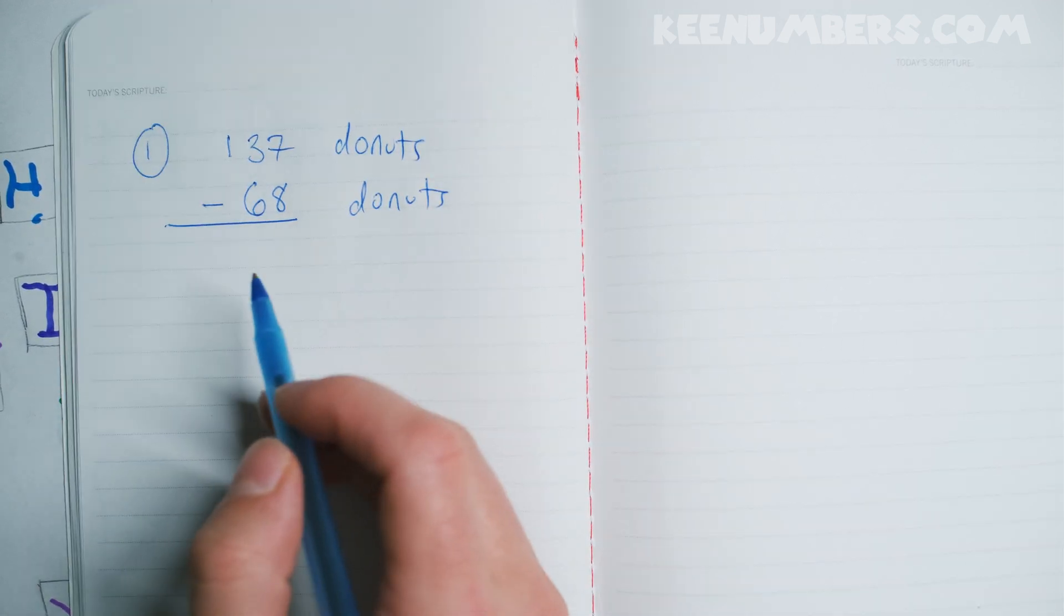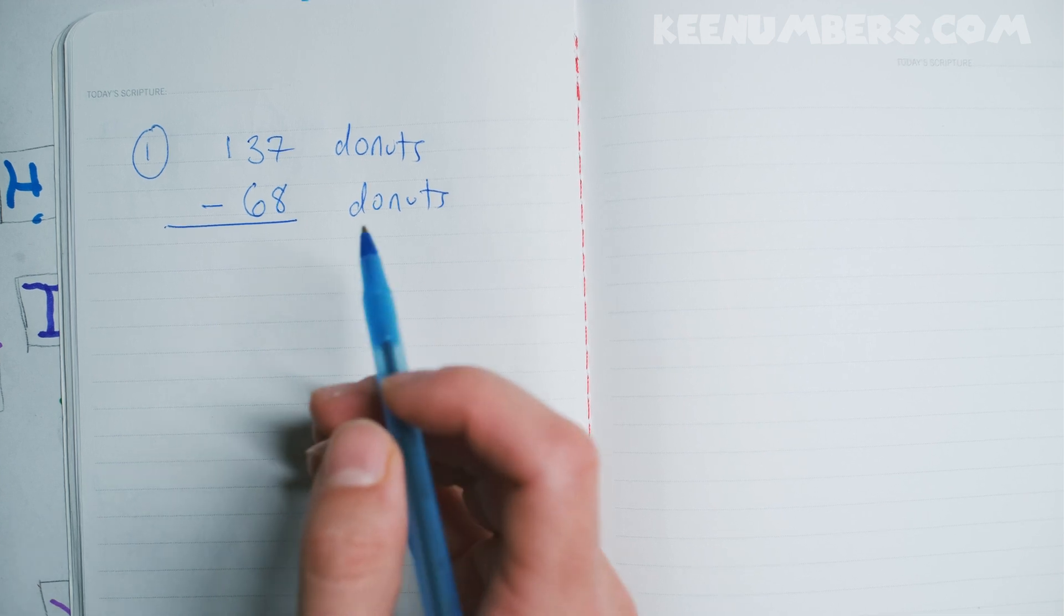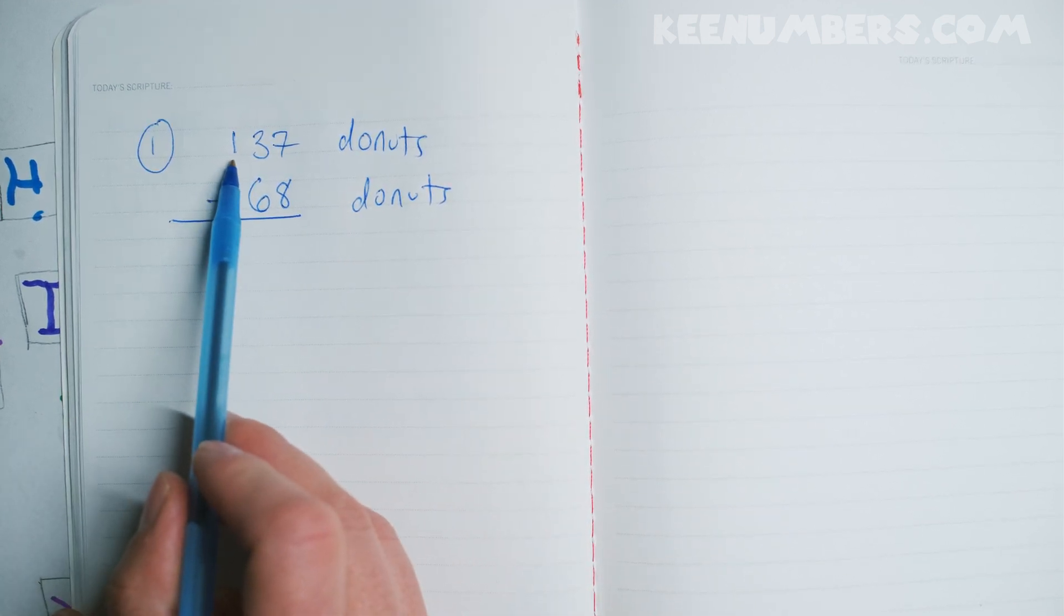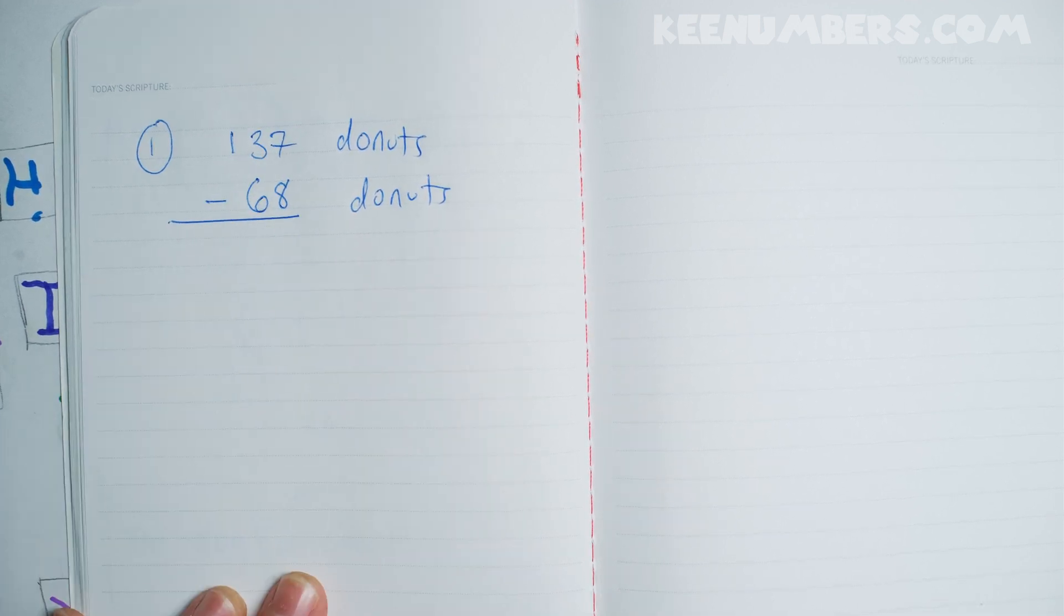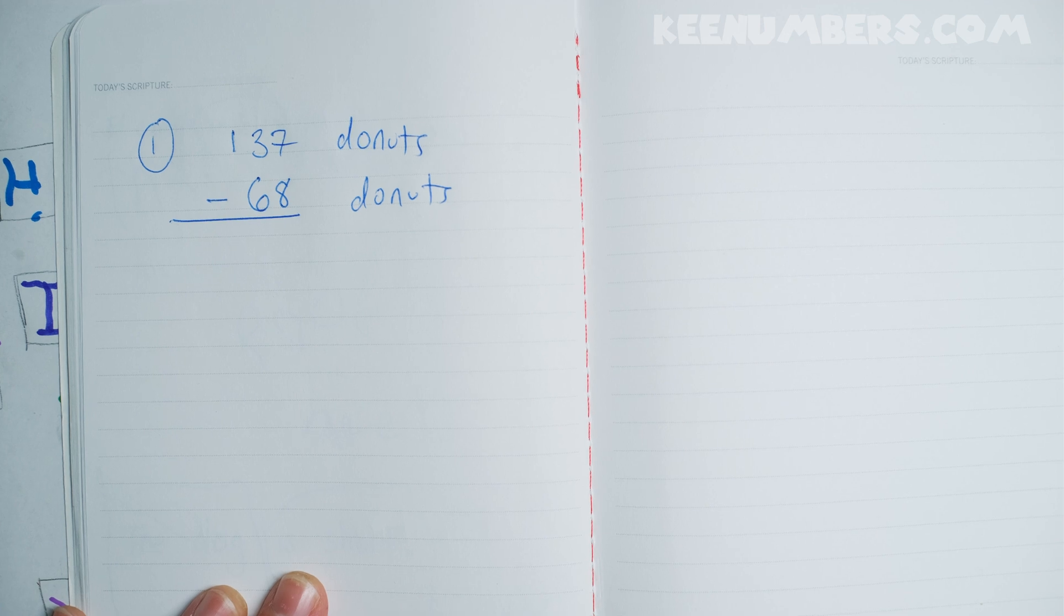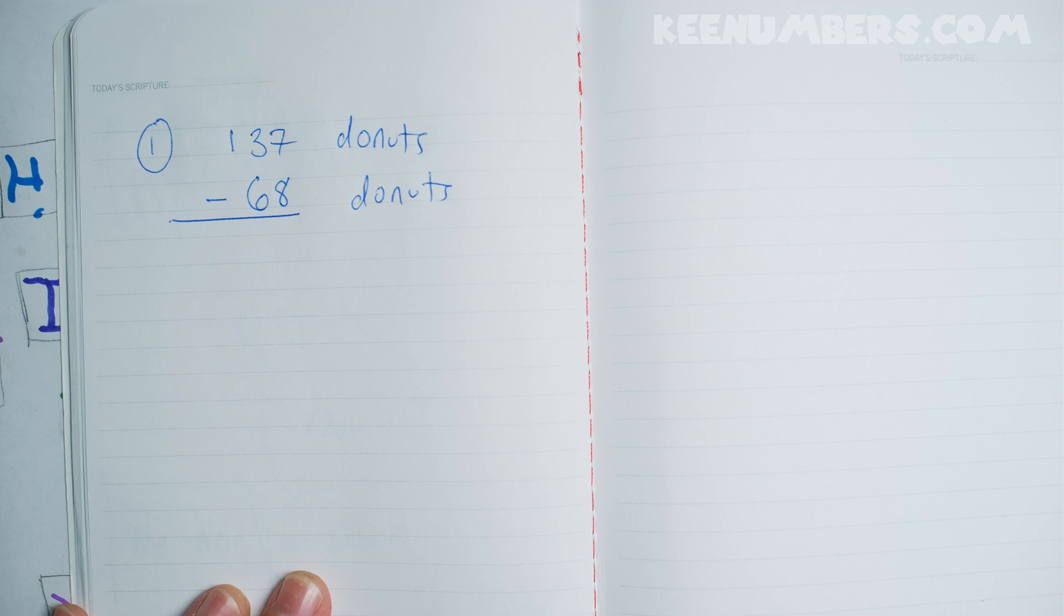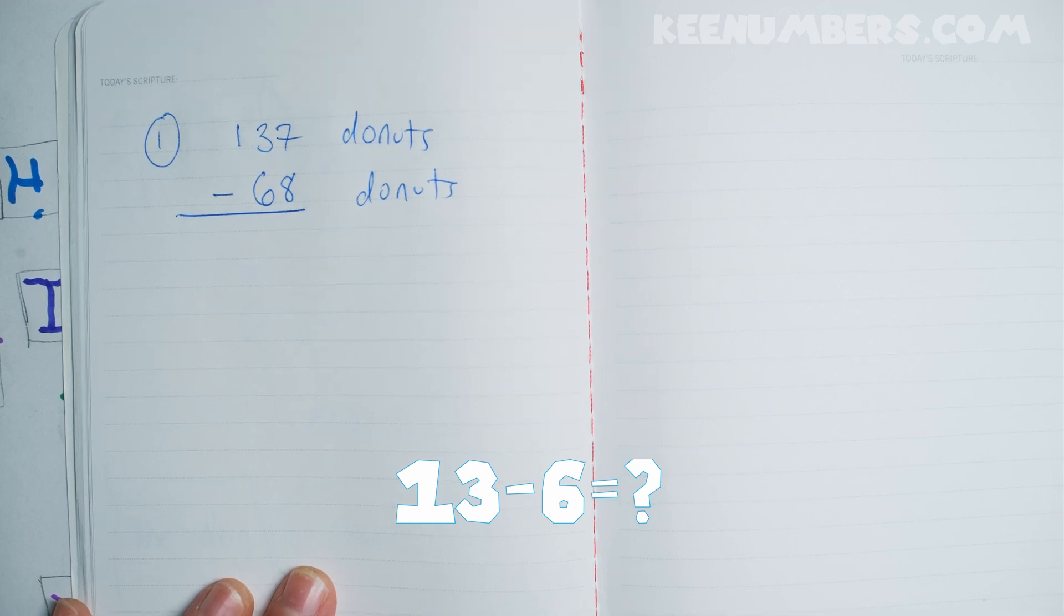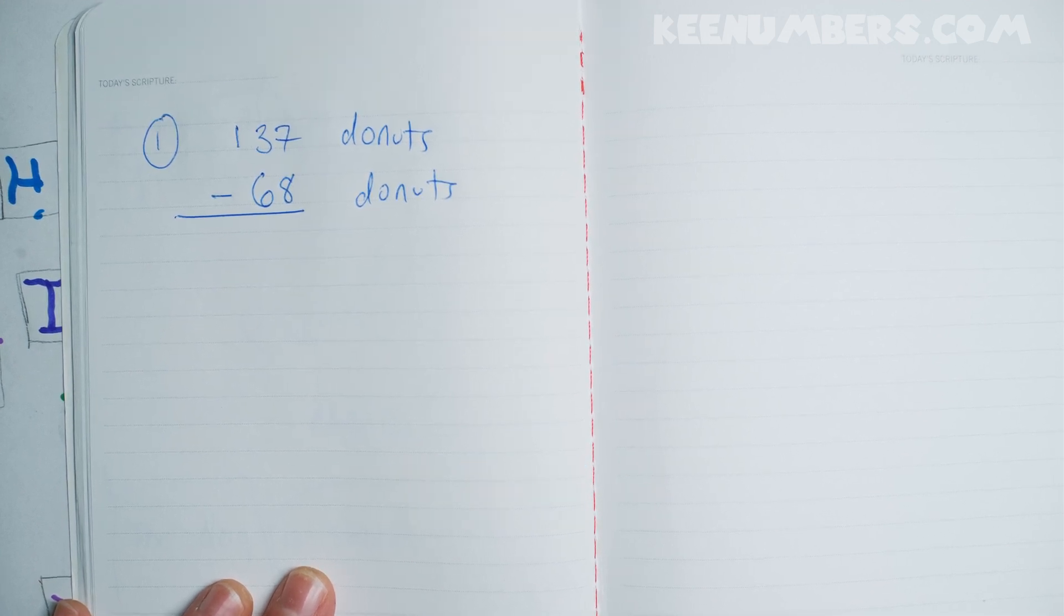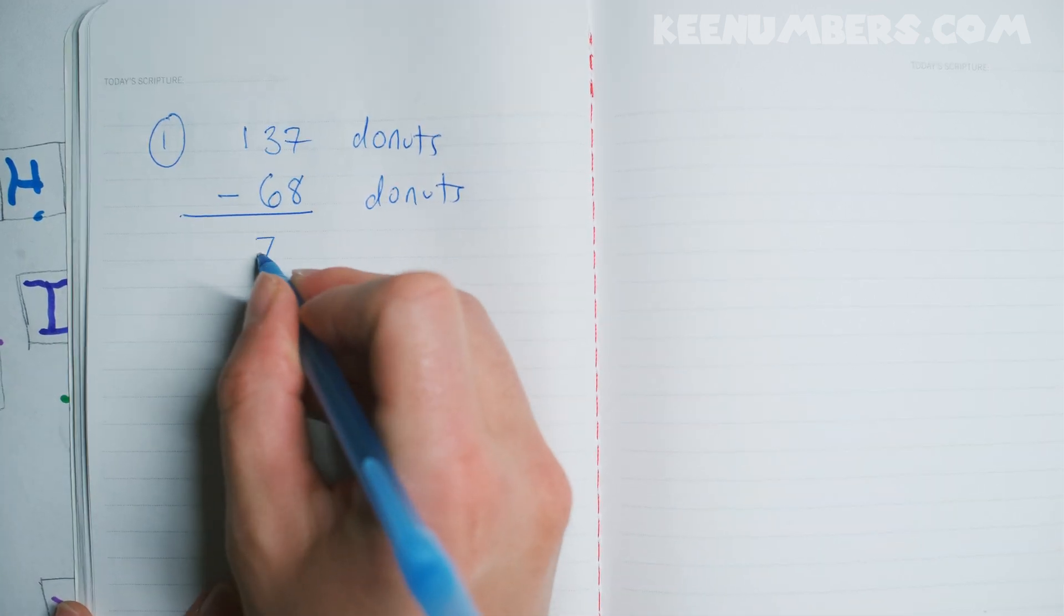Well, 100 minus 0. That's still 100. But what about 130 minus 60? Or even just 13 minus 6, Pirate Sam. What's 13 minus 6, Pirate Sam? Alright, Pirate Sam. What's 13 minus 6? 15 minus 6, which is 7! That's 7, correct.